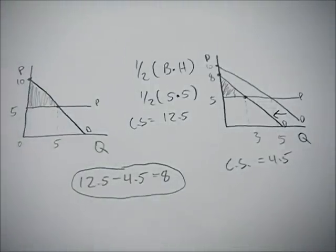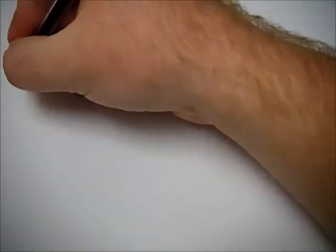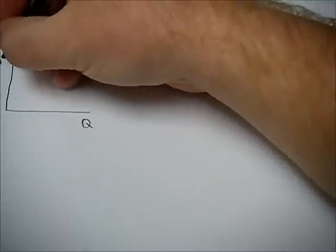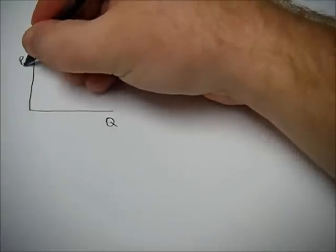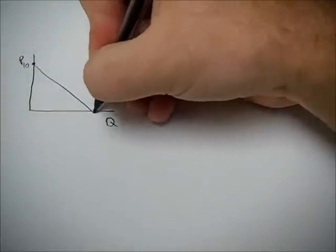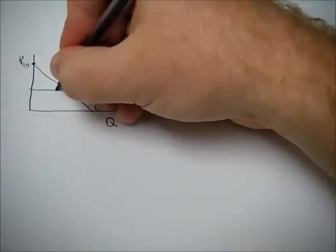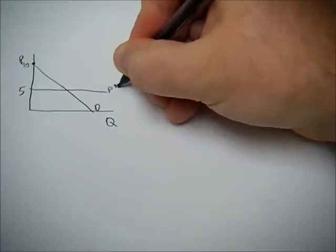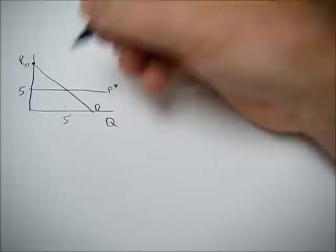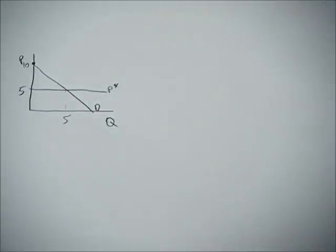You can also have a situation where the price increases. So if you have Q and P, let's do 10. That's our demand curve. We have a P of 5, P star. Our equilibrium quantity is 5. We know what the area of that is.